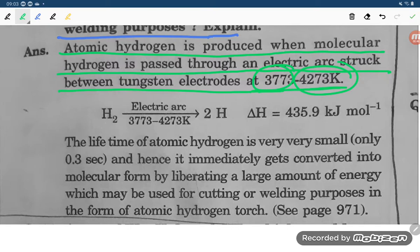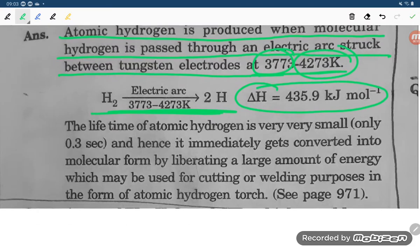So here you see student, atomic hydrogen is getting produced by the electric arc, and here is energy released 435.9 kilojoules per mole absorbed. Okay, student, this much.